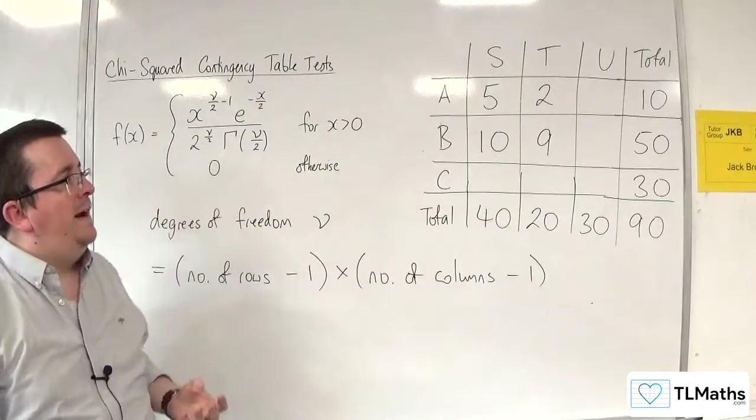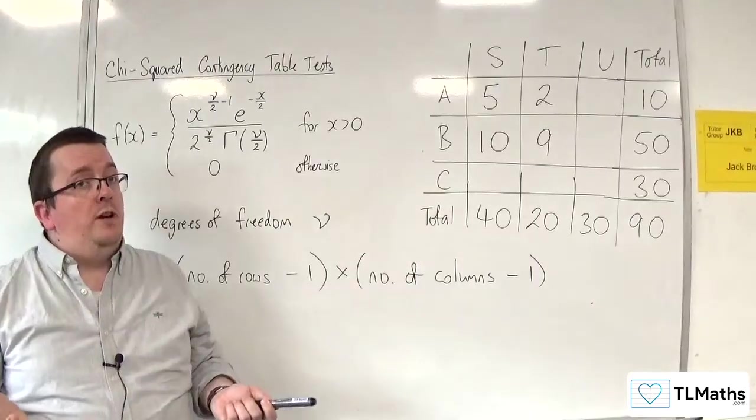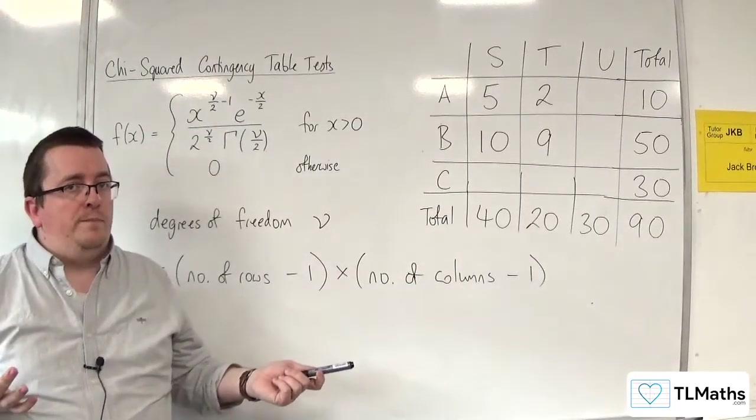So, in our case, we get 2 times 2, so nu, the number of degrees of freedom, would be 4. Because there were 4 values that I had to put in before you were able to fill in the rest of the table. That's essentially what we mean by degrees of freedom, in this case.